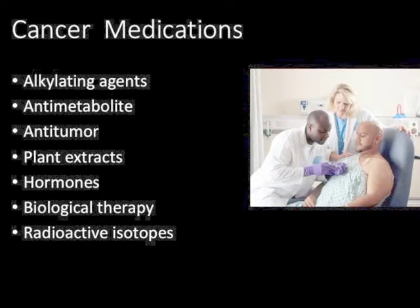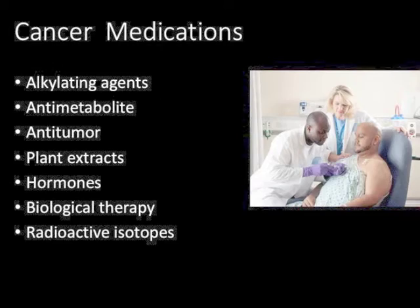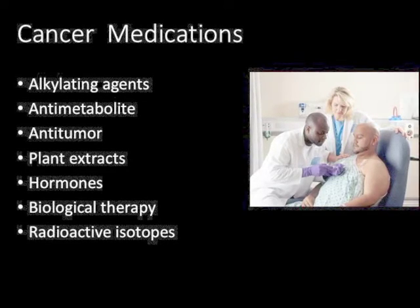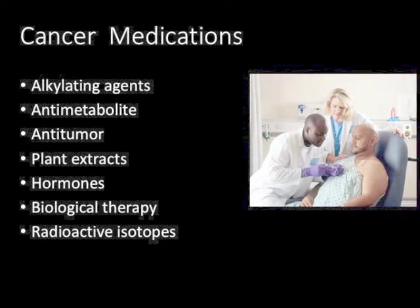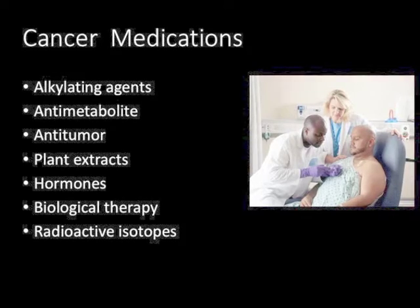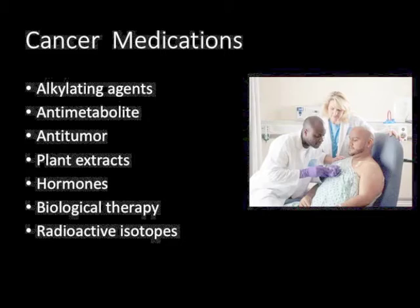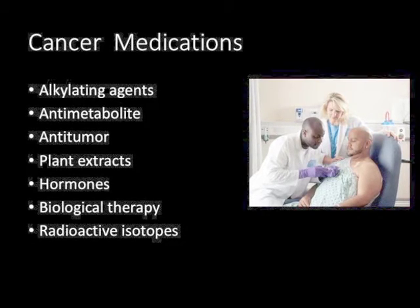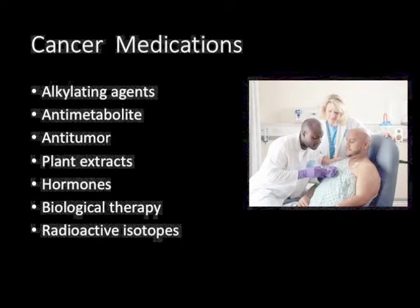Cancer is caused by a disorderly and uncontrolled division of cells. Many chemicals can trigger this, such as nicotine or alcohol. Cancer cells divide quickly and can metastasize or spread into other areas. Powerful drugs and treatments are used to kill cancer. These include alkylating agents, anti-metabolites, anti-tumor agents, plant extracts, hormones, biological therapy, and radioactive isotopes.